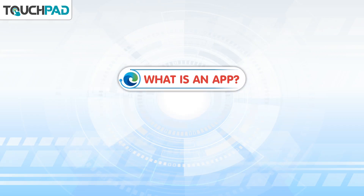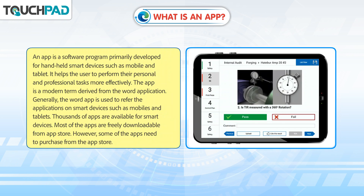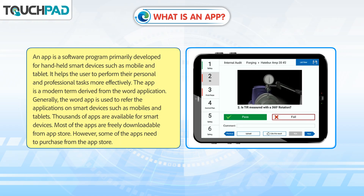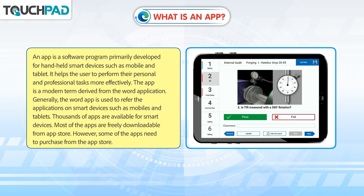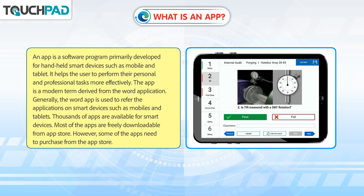What is an app? An app is a software program primarily developed for handheld smart devices such as mobile and tablet. It helps the user to perform their personal and professional tasks more effectively. The app is a modern term derived from the word application. Generally, the word app is used to refer to the applications on smart devices such as mobiles and tablets.